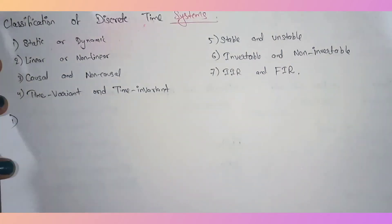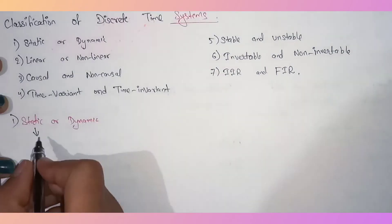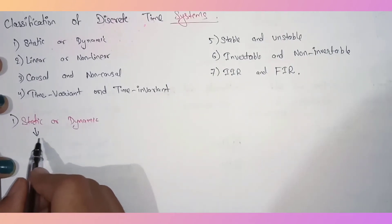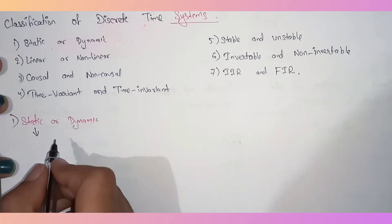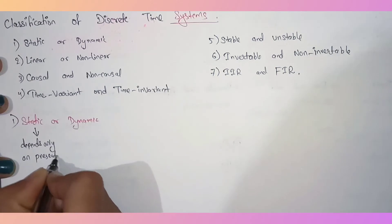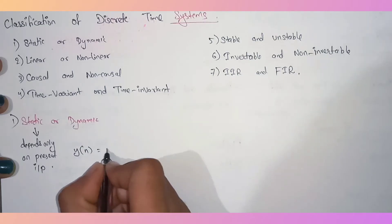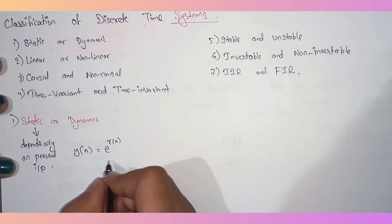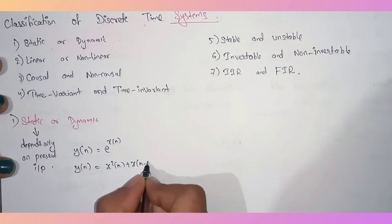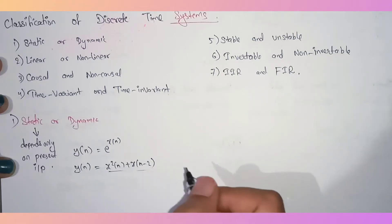A static system is said to be static or memoryless if and only if the present output depends only on the present input; otherwise it is a dynamic system. For example, y(n) = e^{x(n)} is a static system. If y(n) = x²(n) + x(n−2), it depends on present and past input, so this is a dynamic system.